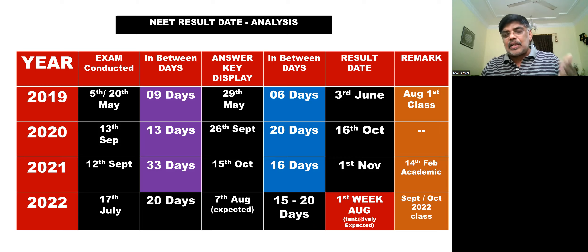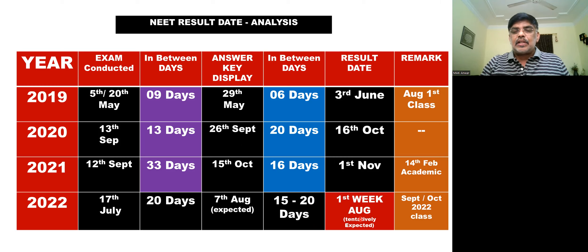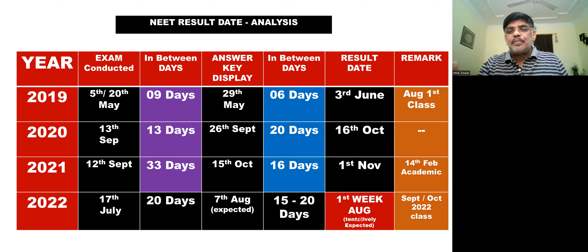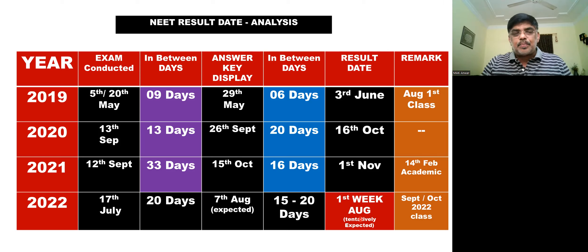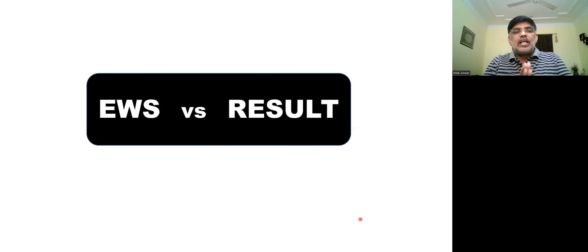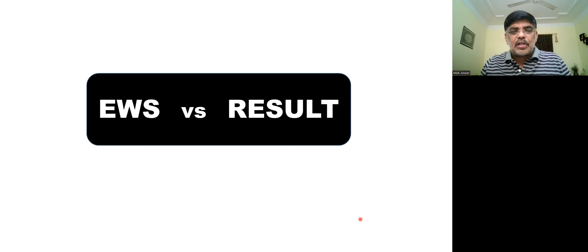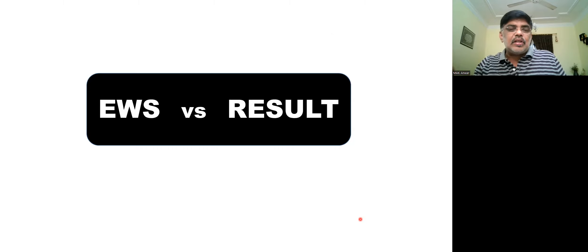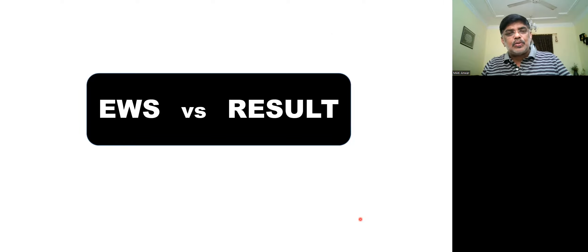So, we will see that in Rajasthan, in Ganga Nahar, there is an exam center involved. That is why there is a tentative delay. You will likely get the result in the first week or in the middle of August. We can expect the result based on previous year patterns.